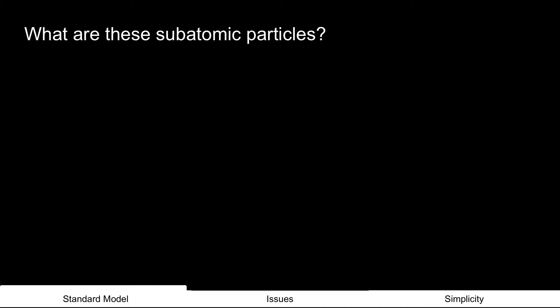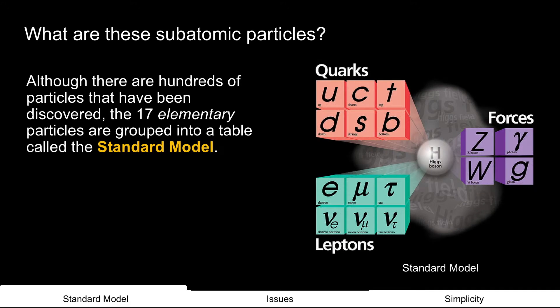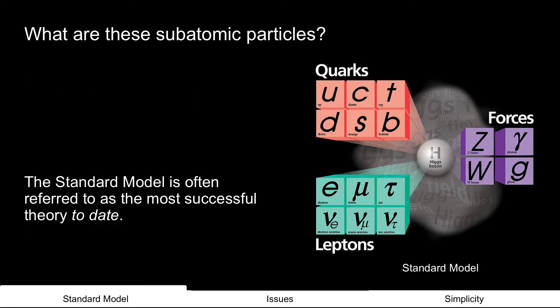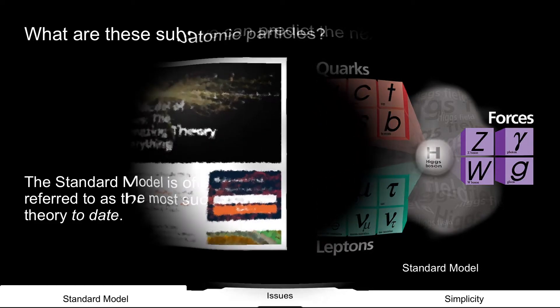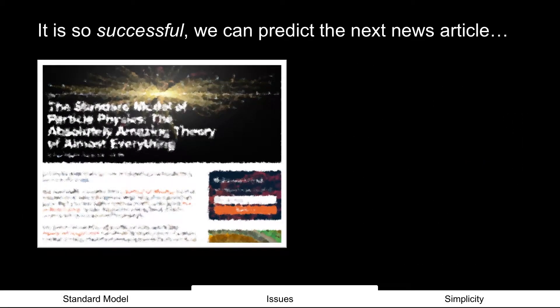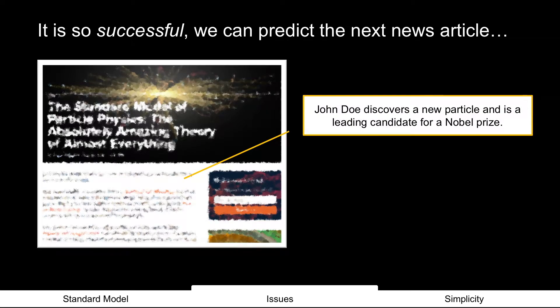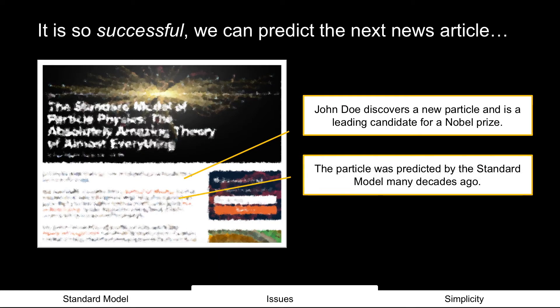Okay, so what are these subatomic particles? Well, there's been hundreds that have been discovered, but it really boils down to 17 elementary particles that are grouped together in what's called the standard model. And the standard model is often referred to as the most successful theory to date. In fact, it's so successful, we can predict the next news article. And I can already tell you what it's going to say. It'll say John Doe discovers a new particle, and guess what? He's a candidate for a Nobel Prize. And the particle was predicted by the standard model long ago, which is why it's so successful.